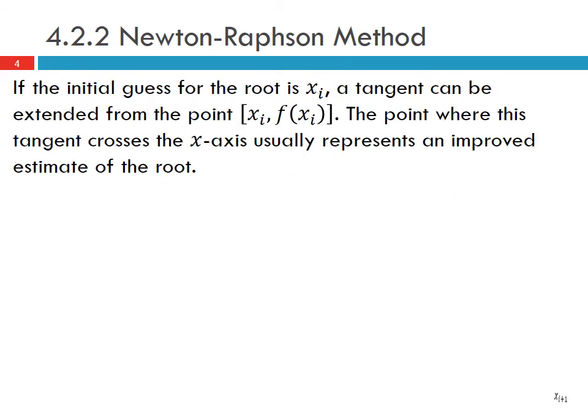The idea with the Newton-Raphson method is that if an initial guess for the root is xi, a tangent can be extended from the point xi and f of xi — so where this value xi meets the function — and the point where this tangent crosses the x-axis usually represents an improved estimate of the root. We can see this graphically: we have a function f of x and our root.